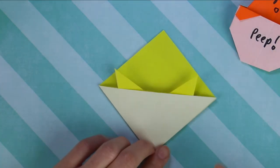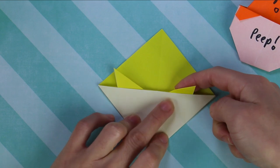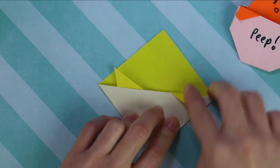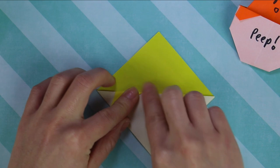Now rotate. And now you want to take this little triangle and fold it down. Do the exact same thing on the left side.